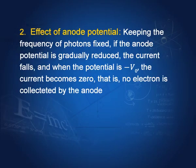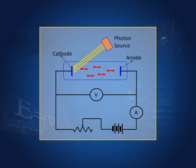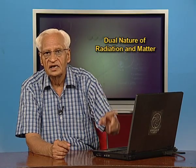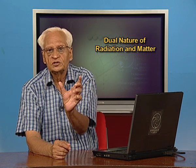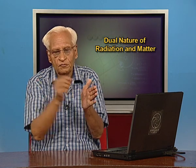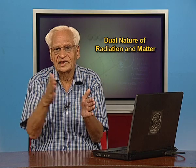Now let us look at the effect of anode potential, keeping the frequency of photons fixed above the threshold. If the anode potential is gradually reduced, there is a slow decrease in current because fewer electrons are captured by the anode — those without sufficient kinetic energy cannot reach it. If you keep reducing the potential, you reach a point minus V₀ where the current stops entirely.